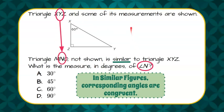So if I were to draw an image of triangle MNO, angle Y and angle N would be corresponding angles. So now we can use this figure to identify angle N, because if we find angle Y, it is congruent to angle N.